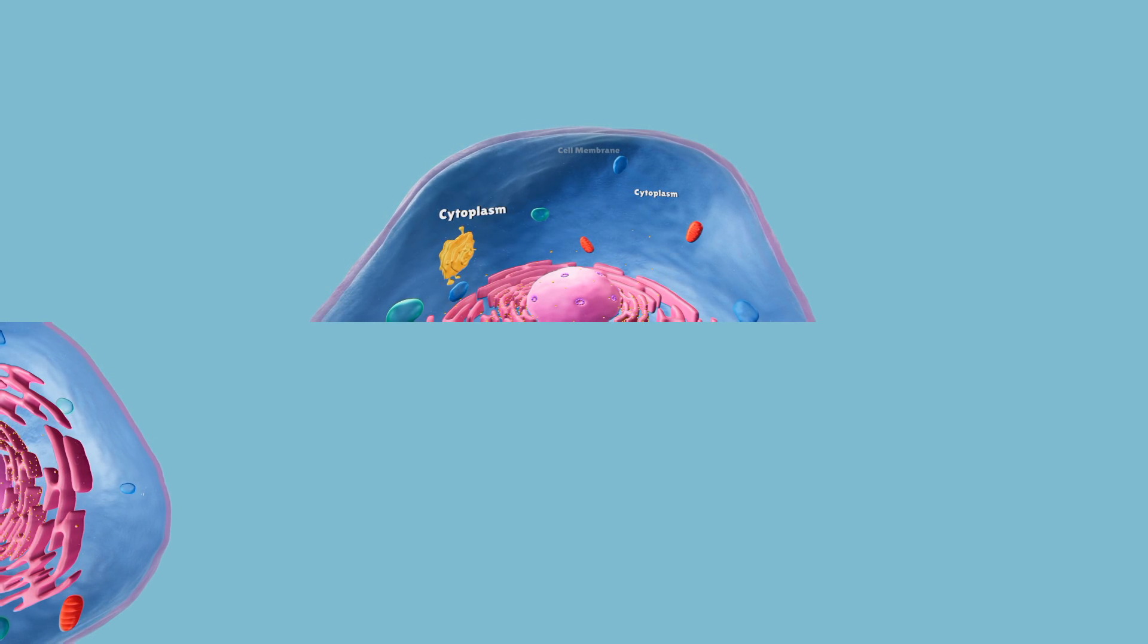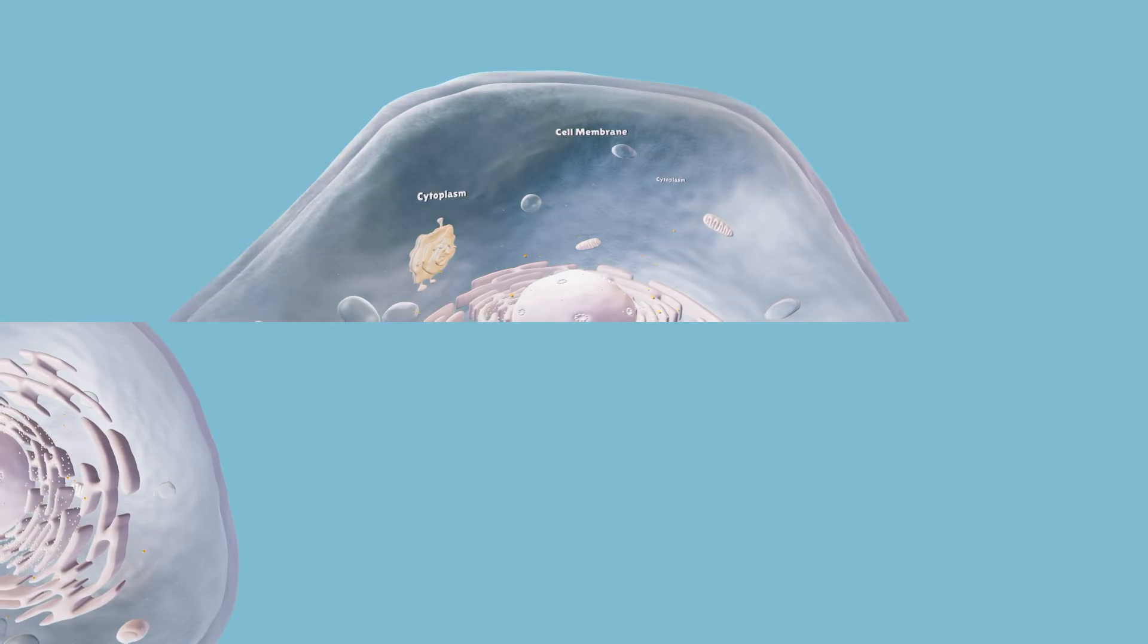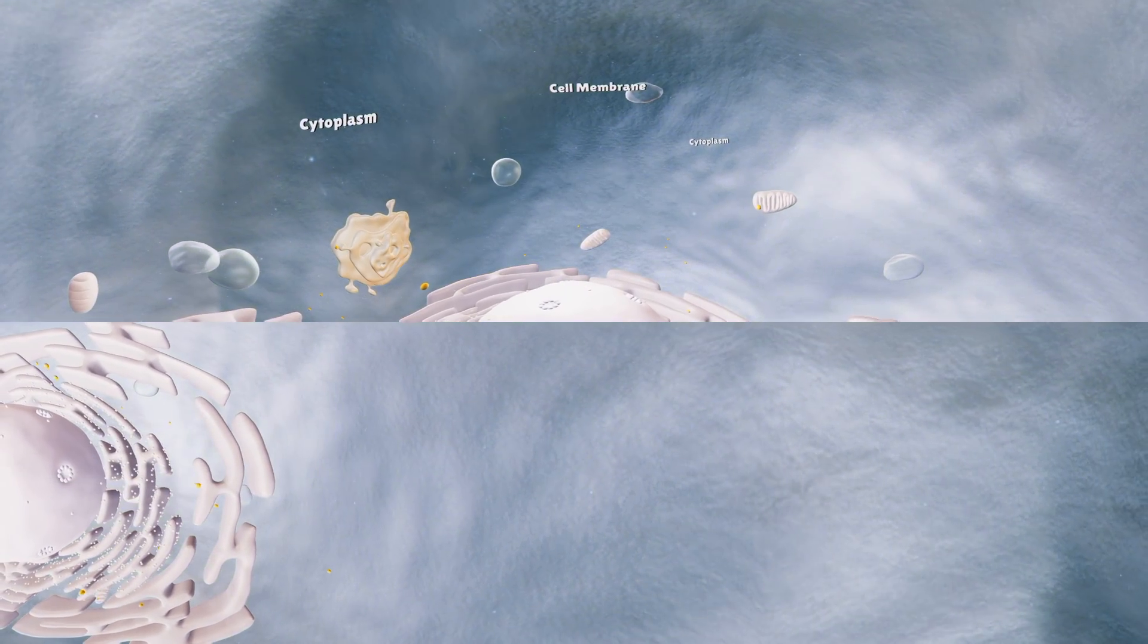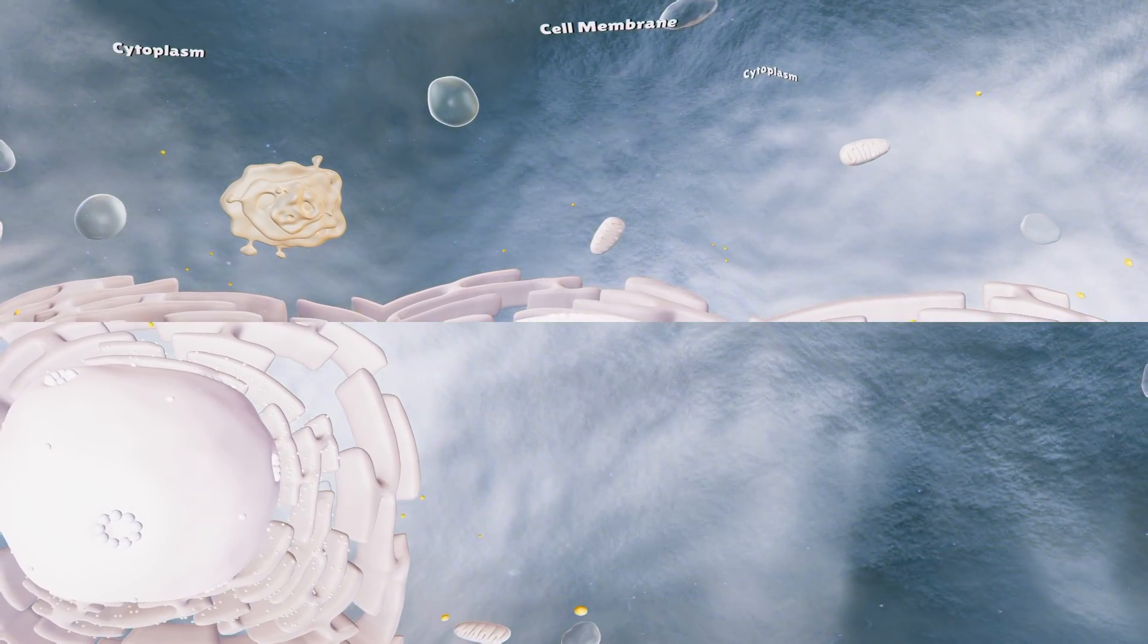The entire cell is surrounded by a cell membrane, which is also a semi-permeable membrane similar to the membrane surrounding the organelles in the cell. This, too, selectively allows substances to enter and leave the cell.